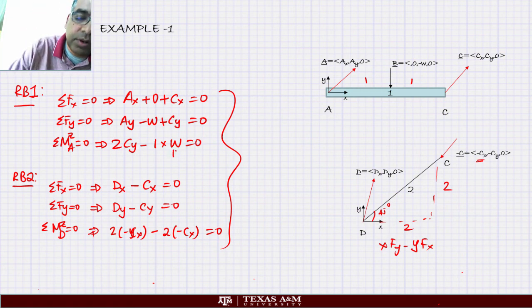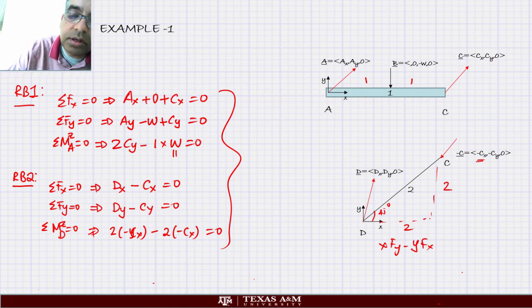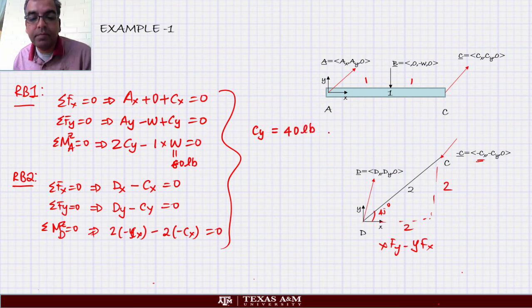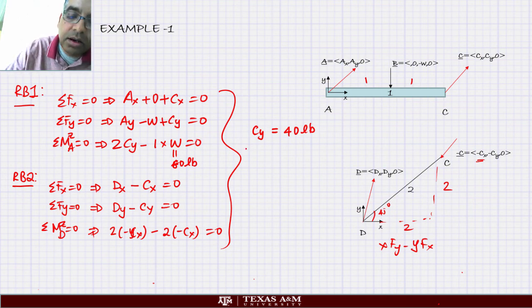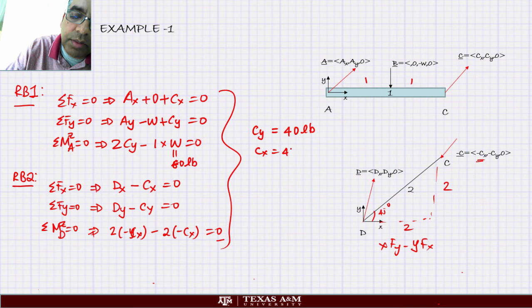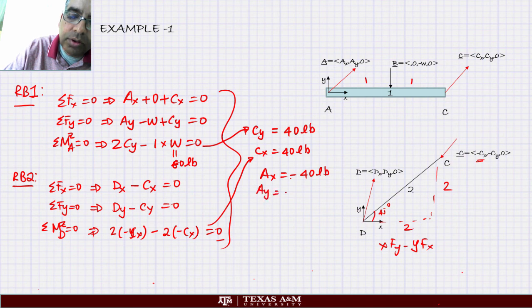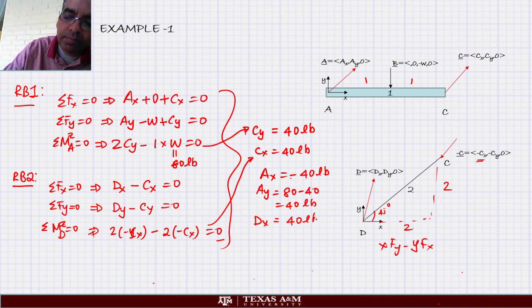This is fairly easy to solve because W equals 80 pounds. From the moment equation of body 1: CY equals 40 pounds. From the moment equation of body 2: CX equals 40 pounds. Then: AX equals minus 40 pounds, AY equals 80 minus 40 which equals 40 pounds, DX equals 40 pounds, and DY equals 40 pounds.